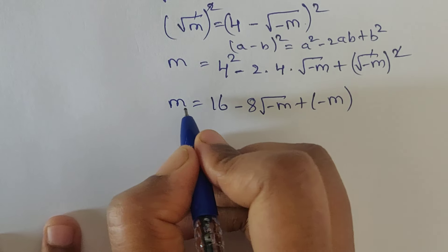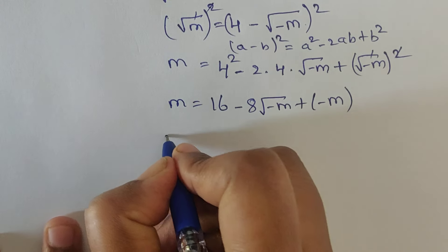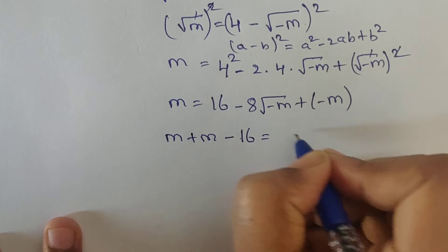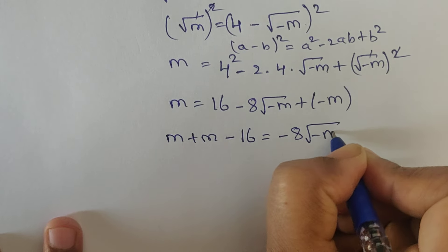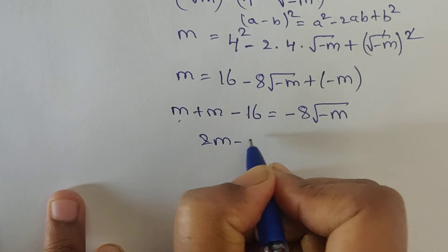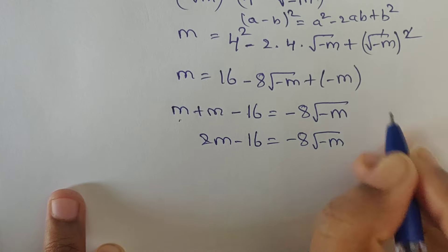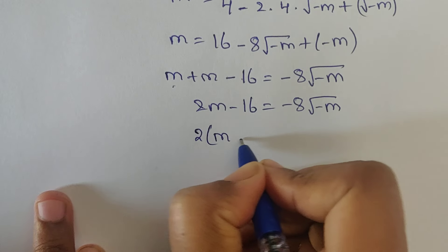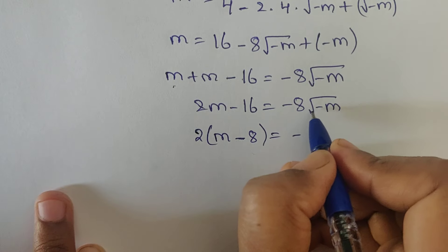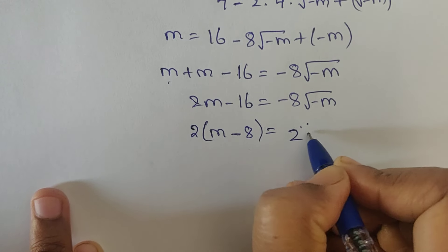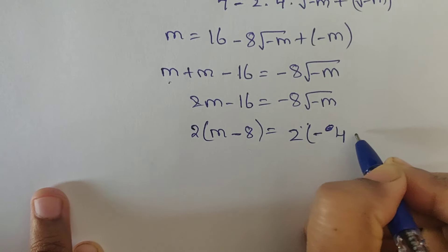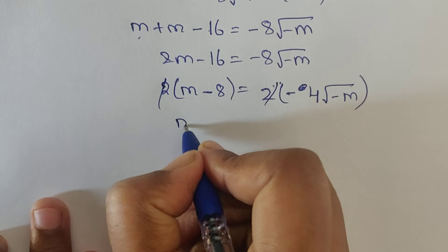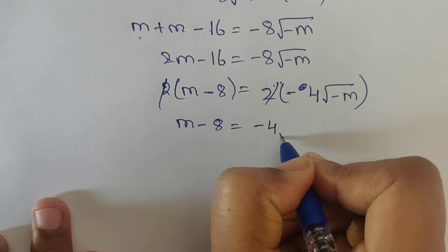Expanding, we get m plus m on the left side. Moving terms over, we have 2m minus 16 equal to minus 8 times square root of minus m. In these two terms we have 2 as a common factor, so dividing both sides by 2 gives m minus 8 equal to minus 4 times square root of minus m.